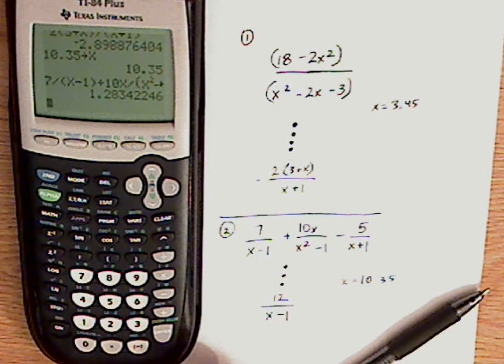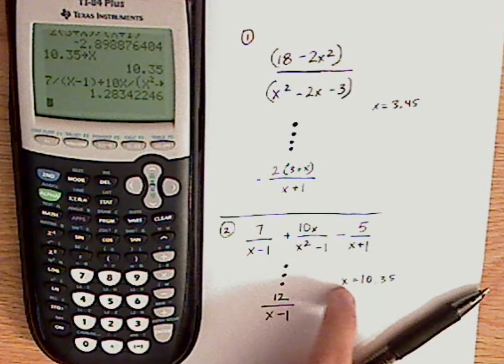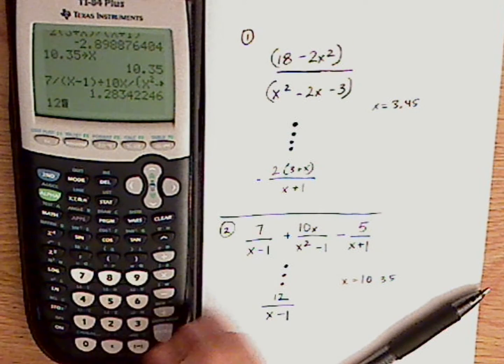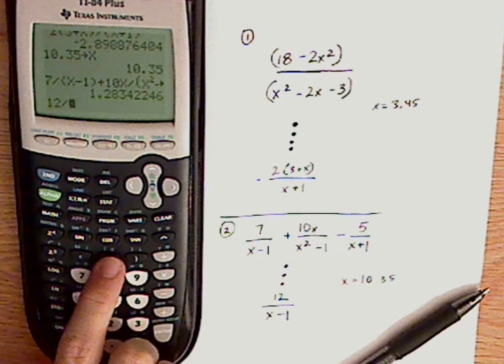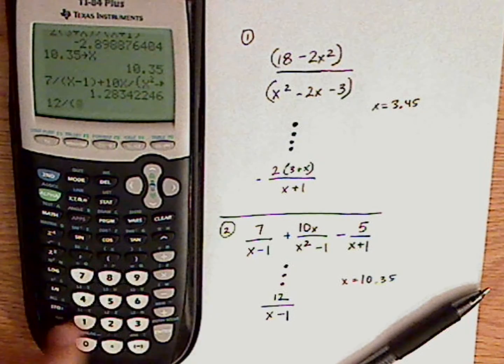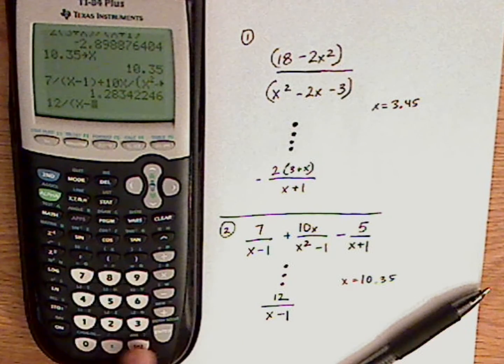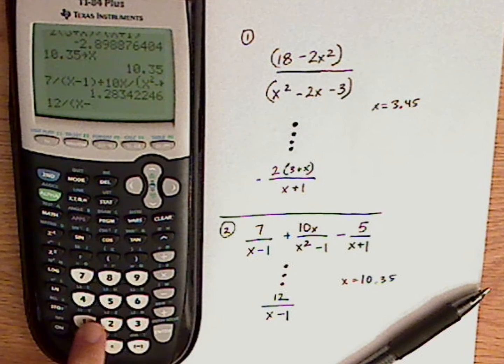Again, you're going to get a funny value because you're using a funny value. And then just type in 12 divided by parentheses x minus. Not pushing this, pushing the minus sign.